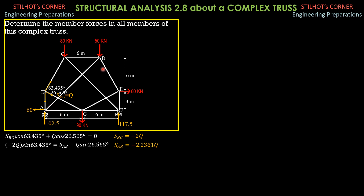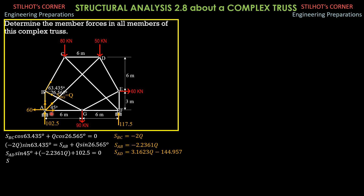At joint A, the angle here is arctan of 9 meters over 9 meters, which is 45 degrees. First, summation of forces Y so that we can solve for SAD — AG will not be involved. So SAD sine of 45 degrees plus SAB, which is negative 2.2361Q, plus 102.5 equals 0. So SAD is equal to 3.1623Q minus 144.957.